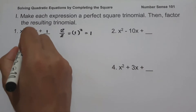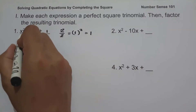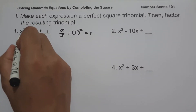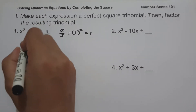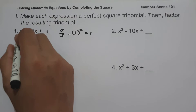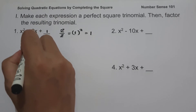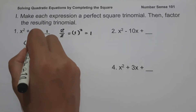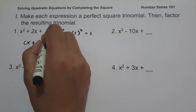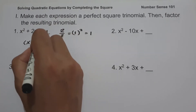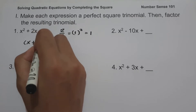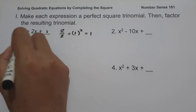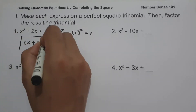And to factor this, let us have the square root of the first term, x squared, which is x. The sign of the middle term is positive, the square root of 1 is 1, and then square. And this will be our answer.